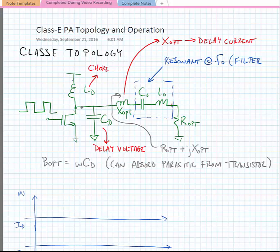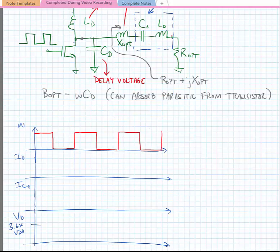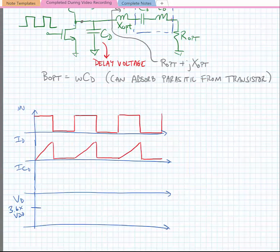So now let's look at the waveforms of this power amplifier. We'll assume that our input voltage is switching between VDD and ground, so we're turning the MOS transistor on and off. In the case where we turn the MOS transistor on, the current is the integral of the voltage across the inductor.